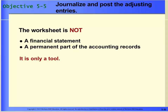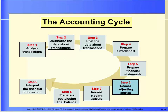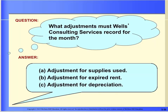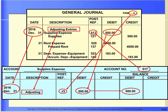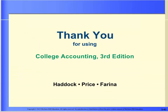Remember, a worksheet is just a tool that accountants use — it is not a formal financial statement. The adjustments shown on the worksheet must become part of the permanent accounting records. Each adjustment is journalized and posted to the general ledger accounts. The fifth objective of this chapter is to journalize and post the adjusting entries, which is also the sixth step in the accounting cycle. After all adjustments have been posted, all accounts in the financial records are up to date. Adjustments are usually made on the last day of the accounting period.